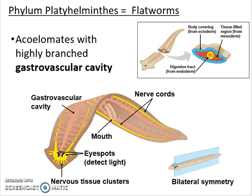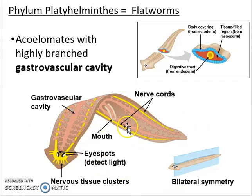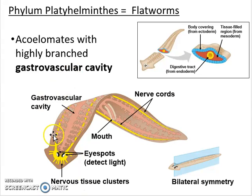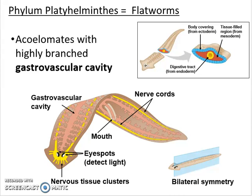To compensate for lacking a body cavity, flatworms have an extremely branched gastrovascular cavity. They don't have a complete digestive system — they're basically remodeling what we saw in Cnidarians, which had one big hole with a single mouth and anus opening. Flatworms have branched that gastrovascular cavity so food can get in, be digested, and then diffuse throughout their body. They remove undigested waste through the same mouth, so their food is not continuously processed in one direction — quite different from more complex animals.